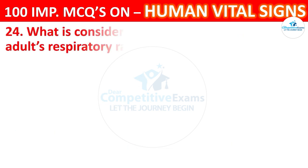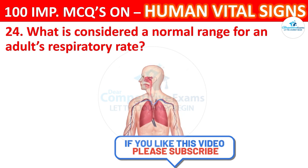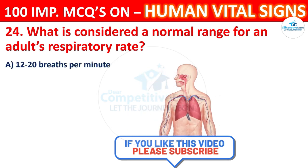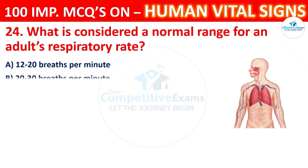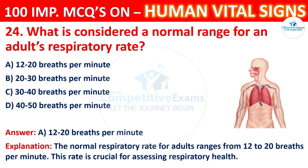Question 24: What is the normal range for an adult's respiratory rate? Options: 12 to 20 breaths per minute, 20 to 30 breaths per minute, 30 to 40 breaths per minute, or 40 to 50 breaths per minute. The correct answer is A, 12 to 20 breaths per minute. The normal respiratory rate for adults ranges from 12 to 20 breaths per minute, which is crucial for assessing respiratory health.